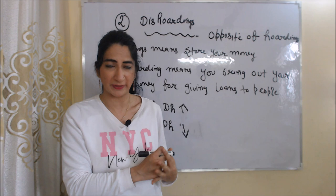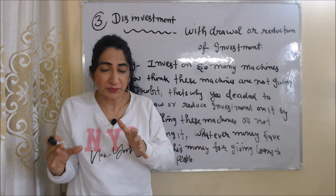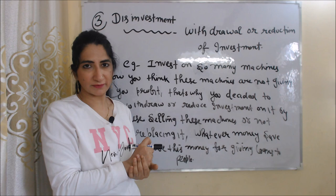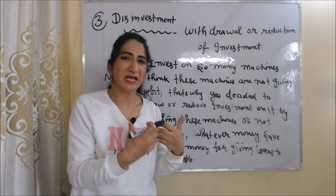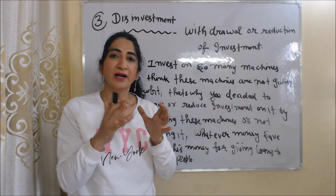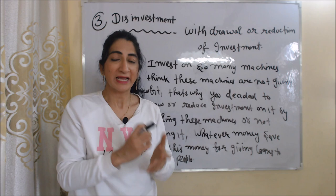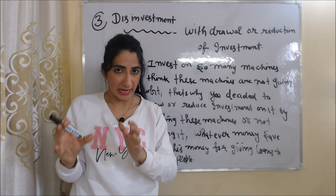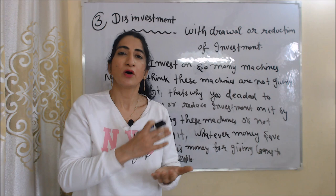The next factor is disinvestment. Disinvestment is the opposite of investment — it means withdrawal or reduction of investment. For example, if you invest in machines but they are not giving you profit, you decide to withdraw or reduce investment by selling those machines or not replacing them. Whatever money you save, you use it for giving loans to people. Disinvestment also depends on interest rate: if interest rate is very high, you will do more disinvestment, and if very low, you will do less disinvestment.